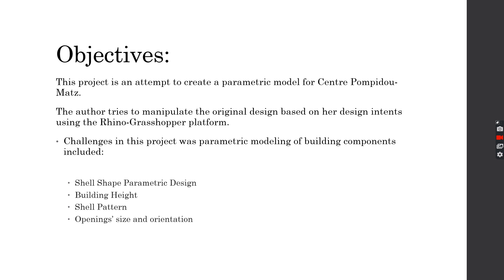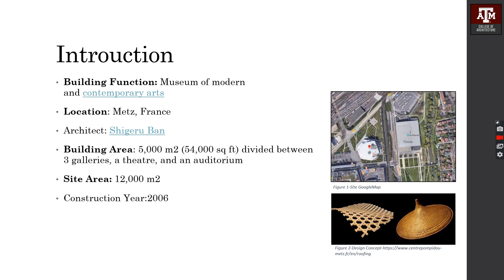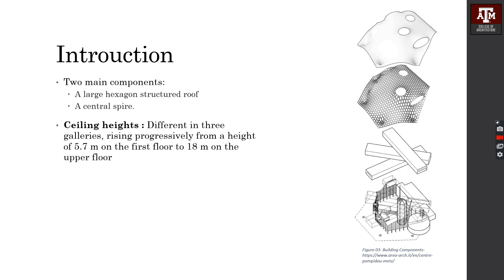The main objective of this project is to apply my own design intent into the original design and parameterize some of the building components. The building is located in Metz and designed by Shigeru Ban. This building has two main components: a large hexagonal structured roof and a central spire.